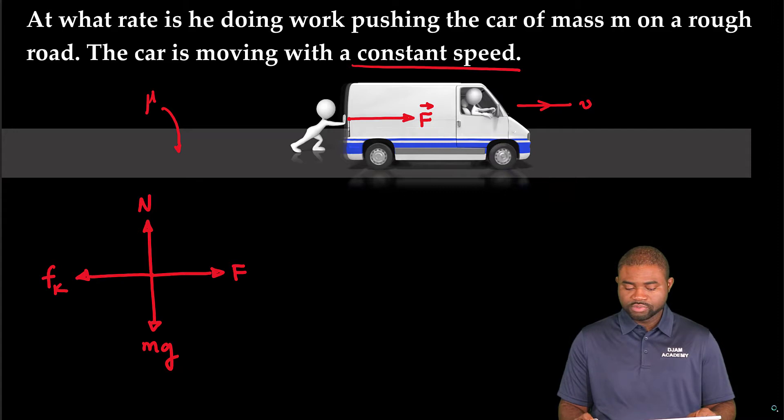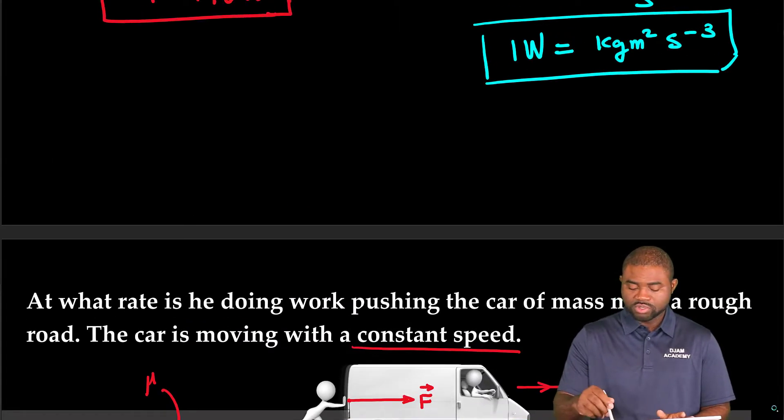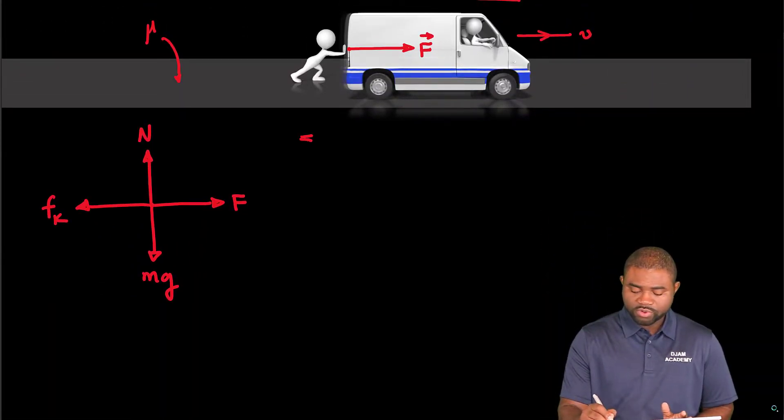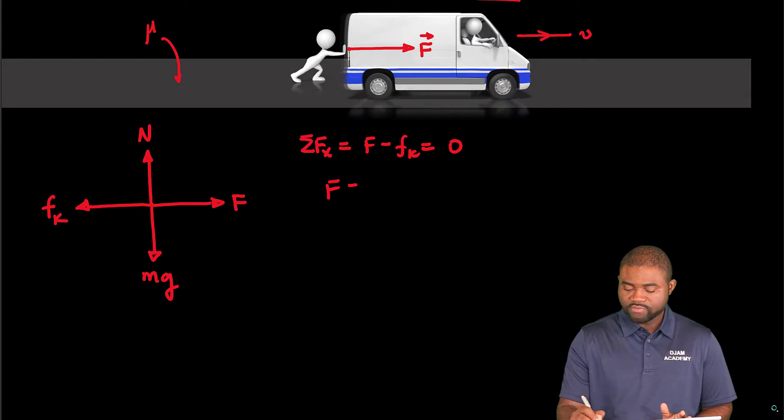Now, because the car is moving at a constant speed, it means that the sum of forces on the car is zero. So the sum of forces along the x direction implies that F minus Fk will be equal to zero. In other words, F is equal to Fk, where Fk represents the kinetic friction acting on the car.